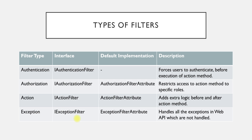The next filter is the exception filter. As mentioned earlier with the error logging example, exception filter handles all unhandled exceptions in the Web API. Whenever there is an error, if you want to log it somewhere, you can put that logic in the exception filter. The default implementation is ExceptionFilterAttribute, and for custom requirements you can create your own class inheriting Attribute and implementing IExceptionFilter.